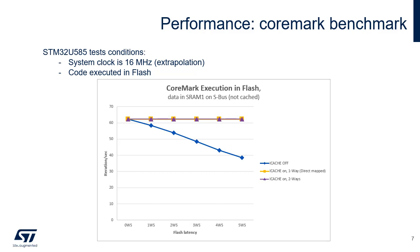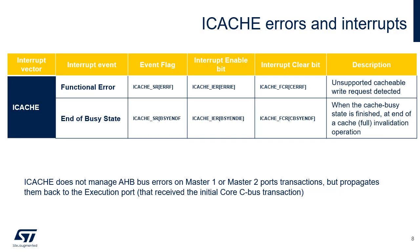Once the code is within the iCache, the flash latency has no impact on performance. When the iCache is disabled, the larger the flash latency, the lower the performance. The two sources of iCache global interrupt are: error detection on cacheable write requests, which sets the ERRF bit in the iCache status register; and end of the full invalidate operation, which sets the BUSYENDF bit in the iCache status register. There is no iCache management of errors occurring on a master 1 or master 2 port request; the erroneous response is propagated through iCache back to the Cortex-M33.